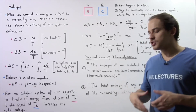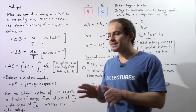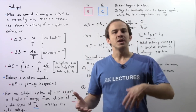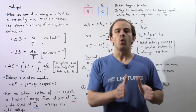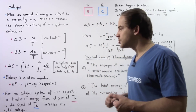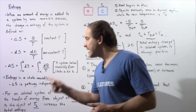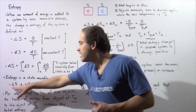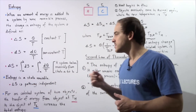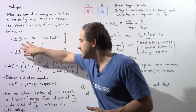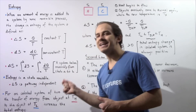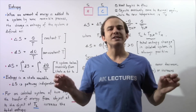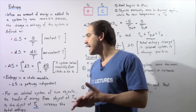In the next lecture, we're going to discuss the fact that entropy is a state variable — we'll see why it's a state variable and what a state variable is. In this lecture, we'll just mention that entropy is in fact a state variable, and what that basically means is the change in entropy as we go from some state A to some state B is pathway independent. It doesn't matter how we go from A to B; the change in entropy will always be the same.